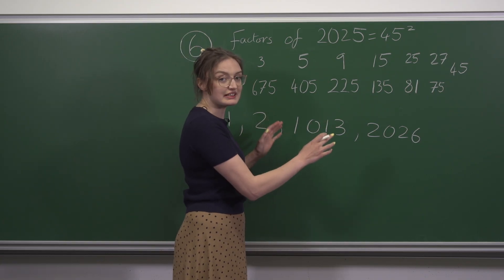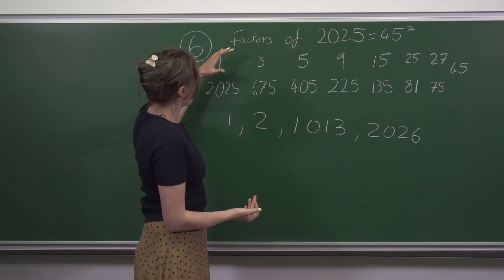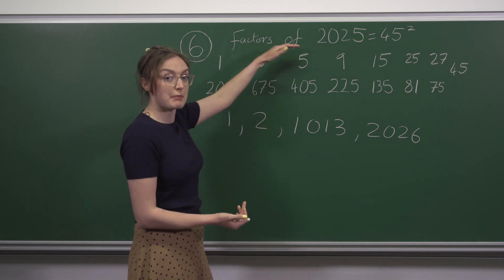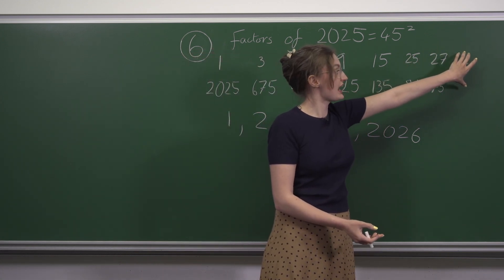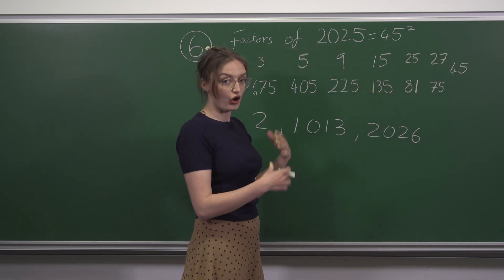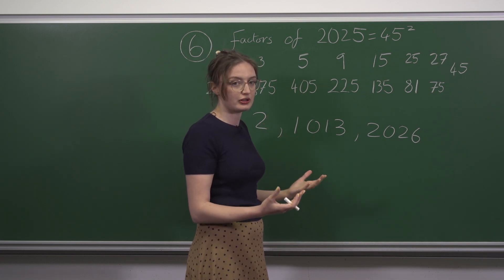This same reasoning can be applied to any square of an odd number. Most of the factors will be pairs of odd numbers and there'll be one odd number left over at the end. So we have an odd number of odd factors meaning they'll sum to an odd number.